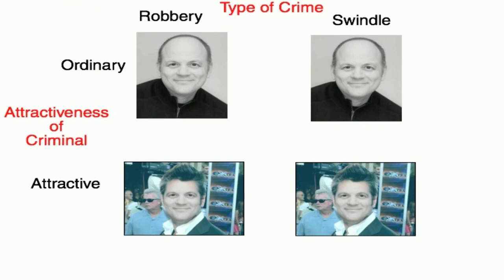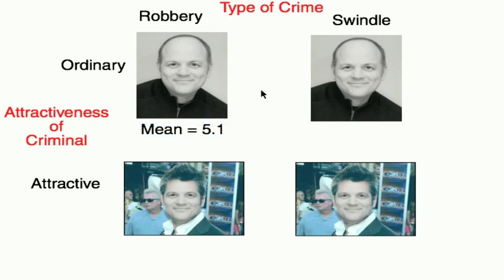Here are some hypothetical results. For condition number one, upper left: ordinary looking guy commits a robbery. My hypothetical subjects are going to give this person 5.1 months in jail on average. I've got 30 students per condition, so with 30 times 4, I've got 120 subjects total. For condition top right: ordinary looking guy, but he commits a swindle. Subjects give, on average, 6.4 months. A factorial design is going to require more subjects to do.